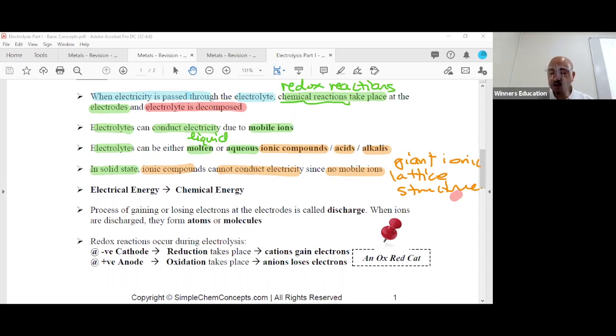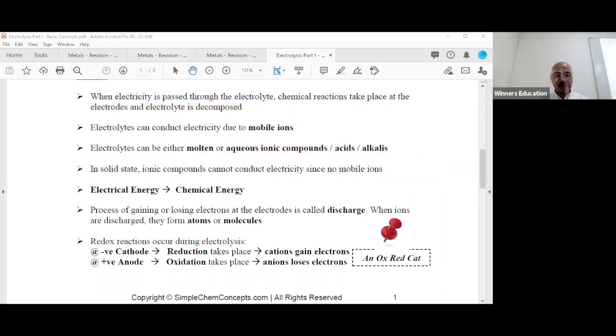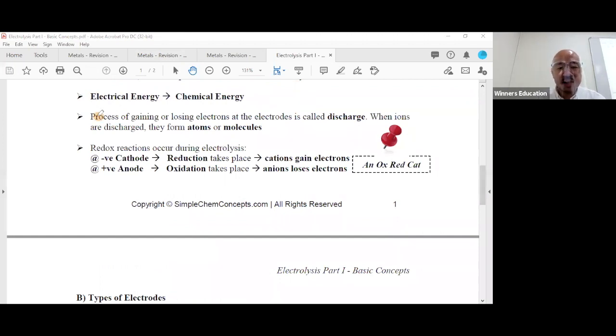In electrolytic cells, what really happens is the battery will give out electrons and electrical energy, and you cause the conversion to chemical energy. This is the conversion of energy. Physics says the law of conservation: energy is not created or destroyed, it's transferred from one form to another. The process of gaining or losing electrons at the electrodes—in redox—has a term: discharge.